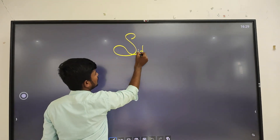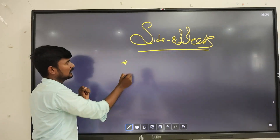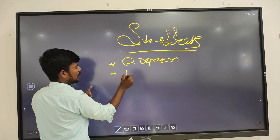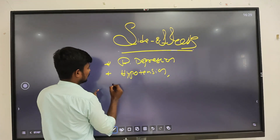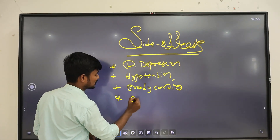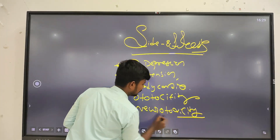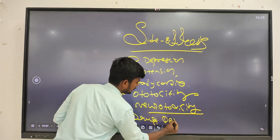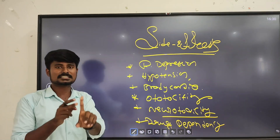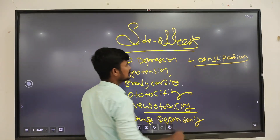Side effects of sedatives and hypnotics: first, it acts on the respiratory center - respiratory depression. Then it acts on the cardiovascular system - hypotension and bradycardia. Along with that, ototoxicity and drug dependency. Acting on smooth muscles - GI smooth muscles: decreasing peristaltic movement leading to constipation.